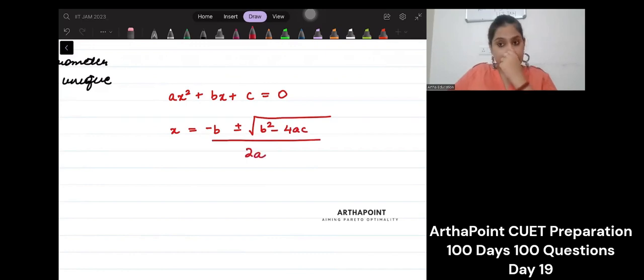Now just imagine, if this part is 0, this is the part which brings in two values of x. Because sometimes you are adding something to b and the other time you are subtracting something from b. So you are getting two solutions of x.